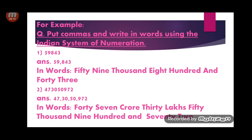Next, I am giving you a larger number: 4,73,05,09 72. Again, write it in periods — comma after three digits, then after two digits each time. The place values are: 2 is ones, 7 is tens, 9 is hundreds, 0 is thousands, 5 is ten thousands, 0 is lakhs, 3 is ten lakhs, 7 is crores, and 4 is ten crores. So the number name is forty-seven crore thirty lakh fifty thousand nine hundred and seventy-two. These examples have been taken from your exercise 3A.